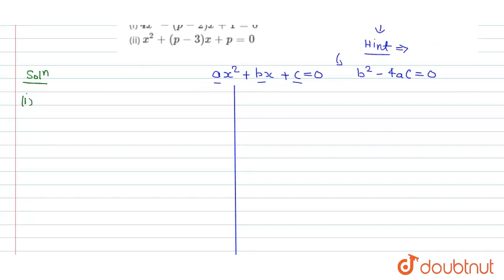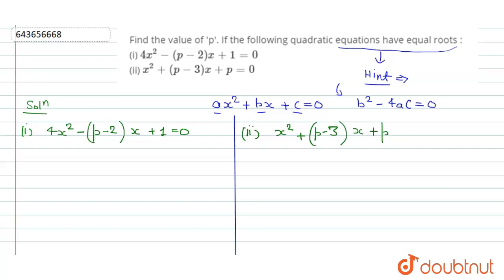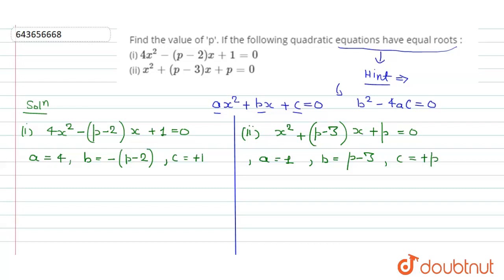The first part is: 4x squared minus (p minus 2)x plus 1 equals zero. The second equation is: x squared plus (p minus 3)x plus p equals zero. Comparing with the standard form, for the first equation: a equals 4, b equals minus(p minus 2), c equals 1. For the second: a equals 1, b equals p minus 3, c equals p.